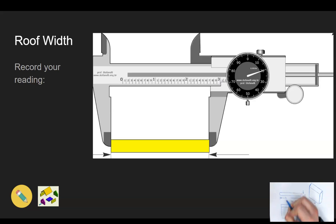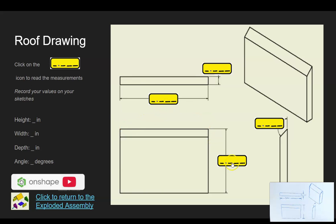We're before the one, so that's zero tenths. And then on the dial we're at 20 on the nose, so that is 3.020 inches that you can see for the roof width. We'll hit the pencil icon, get back to the drawing.